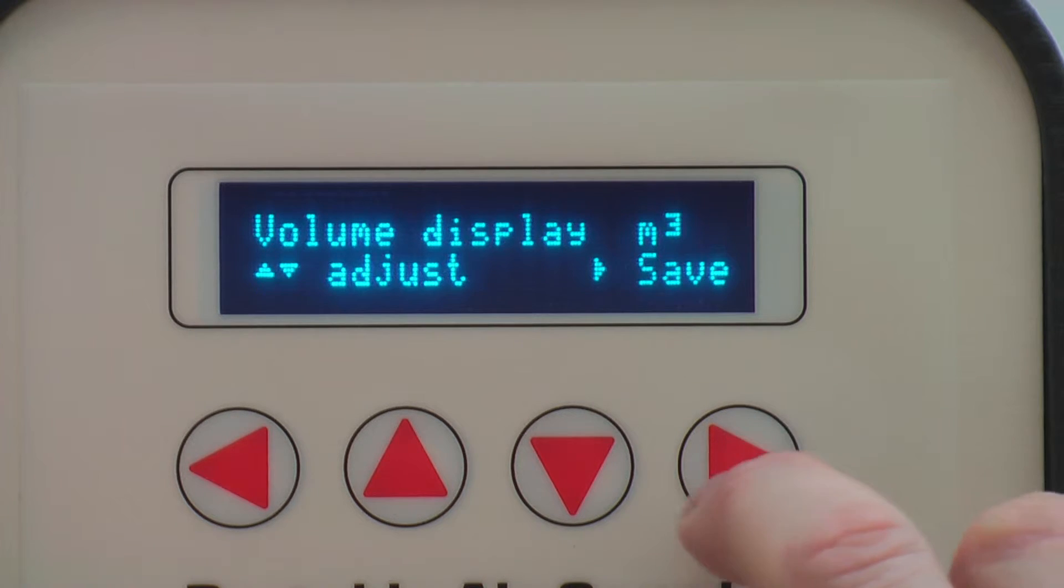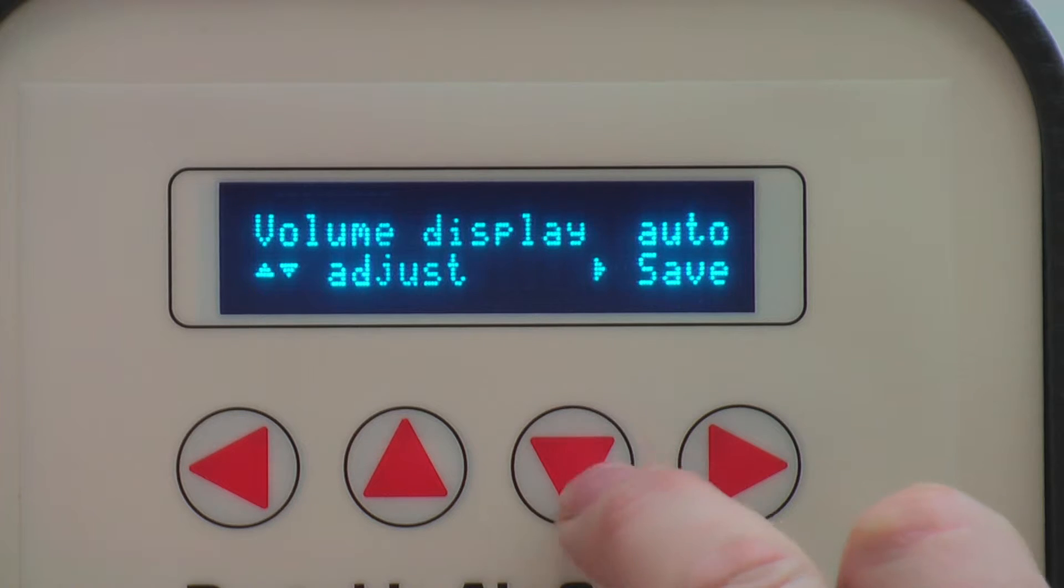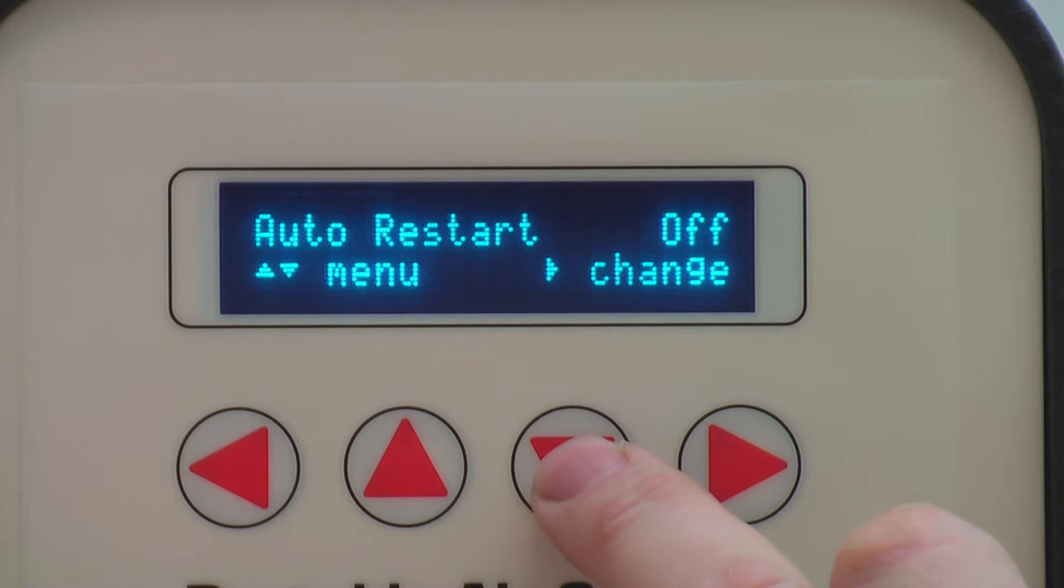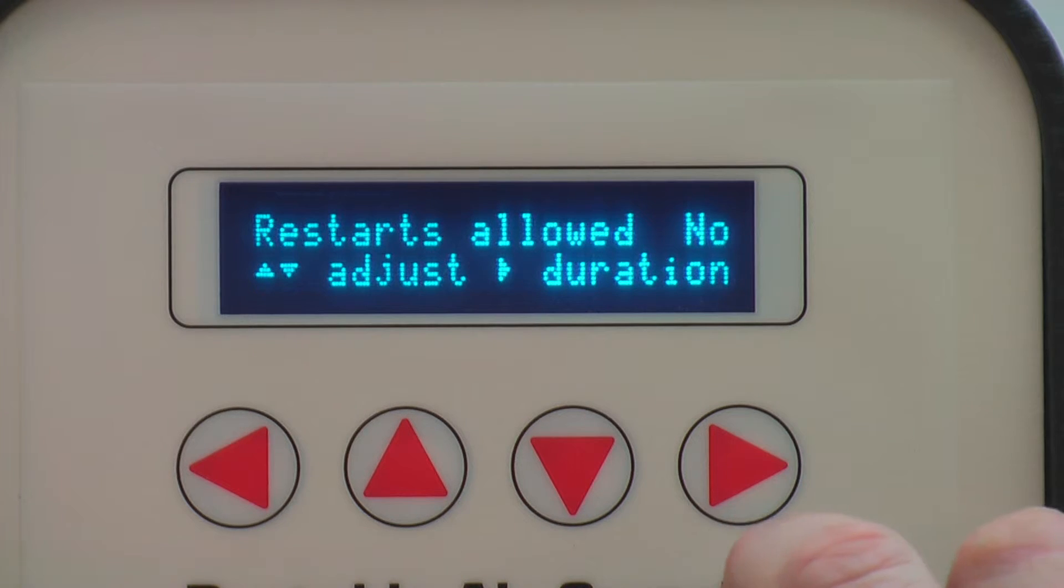Flow rate can be displayed as meters cubed per minute or liters per minute, or you can configure it as auto. Change the volume display to your preference by pressing right and using up and down arrows to cycle through the units. Once you are happy with your configuration, press right to save.